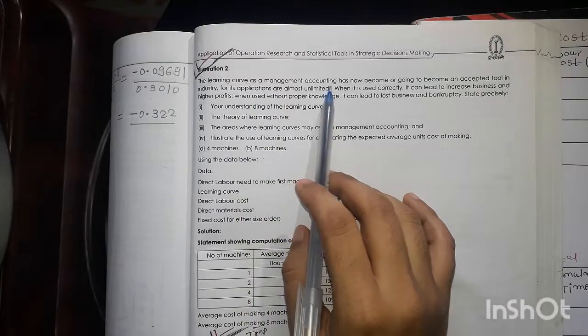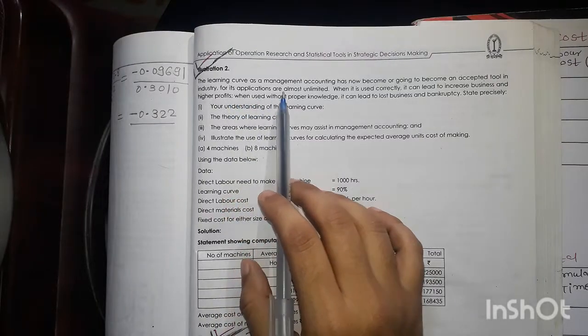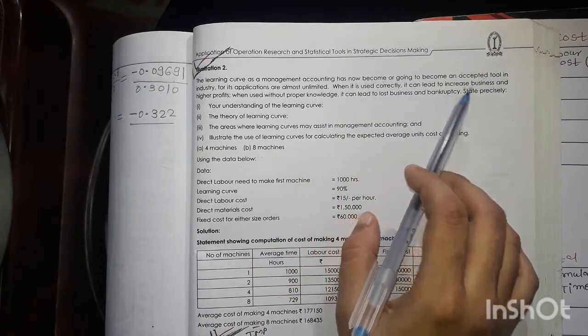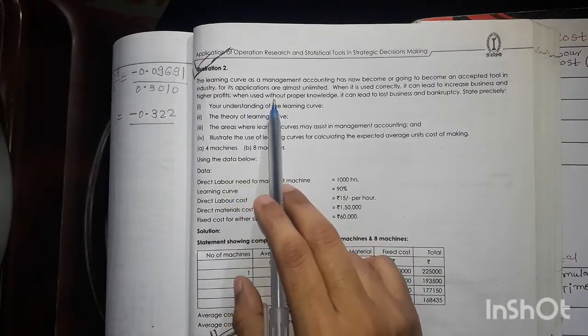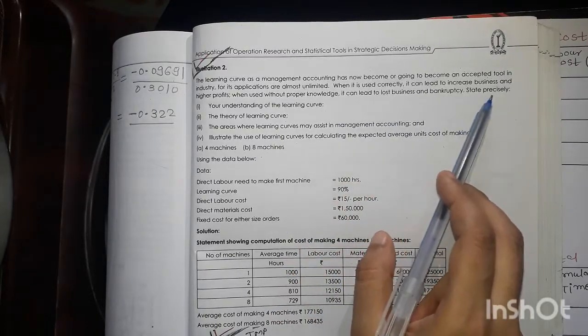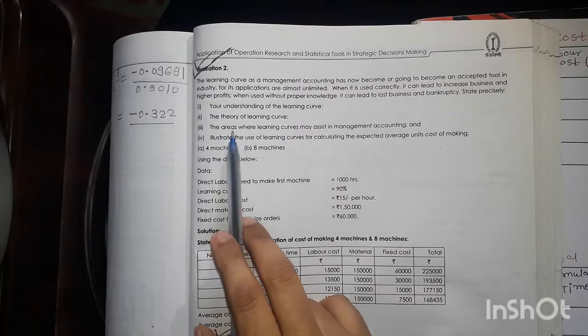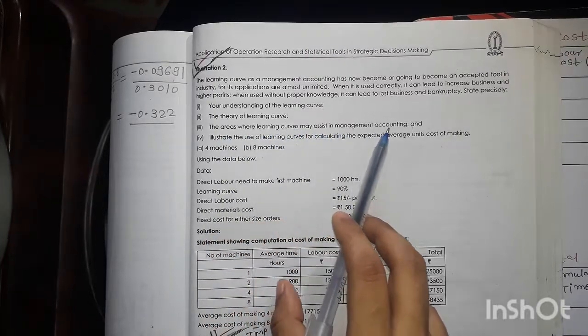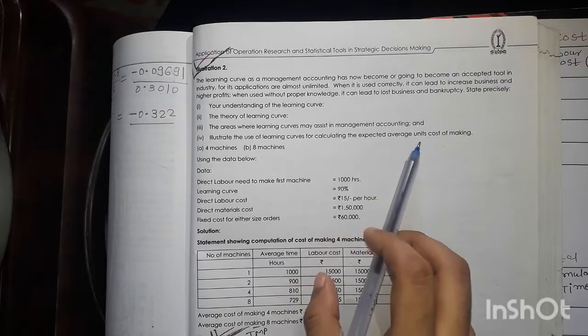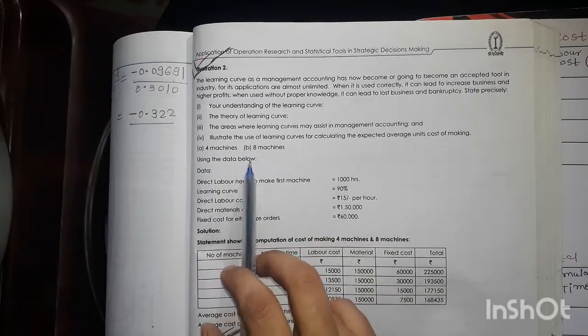The learning curve as a management accounting has now become or going to become an accepted tool in the industry for its applications are almost unlimited. When it is used correctly, it can lead to increased business and higher profits. When it used without proper knowledge, it can lead to lost business and bankruptcy. State precisely your understanding of the learning curve, the theory of learning curve, the areas where the learning curves may assist in management accounting, and illustrate the use of learning curve for calculating the expected average unit cost of making 4 machines and 8 machines using the data below.